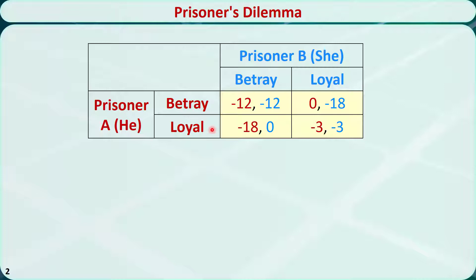If Prisoner A and Prisoner B each betray the other, each of them will serve 12 months in prison. If A betrays B but B remains loyal, A will be set free and B will serve 18 months in prison, and vice versa. If Prisoner A and B are both loyal and remain silent, they will each only serve 3 months in prison on the minor charge.